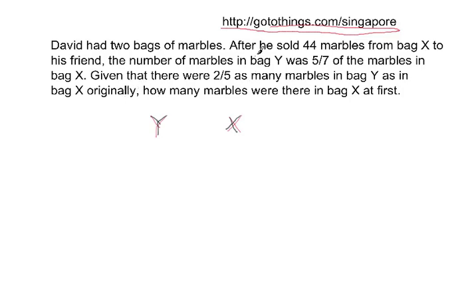Given, there are two things happening. First, he had some marbles, then he sold 44 marbles and then there is another set of equations. So what happened originally? Given that there were 2/5 as many marbles in bag Y as in bag X. When you say something like that, because Y comes first in all these comparisons, the first number two is for Y. So Y had two units. So I'm going to draw just two units for Y and X had five units.